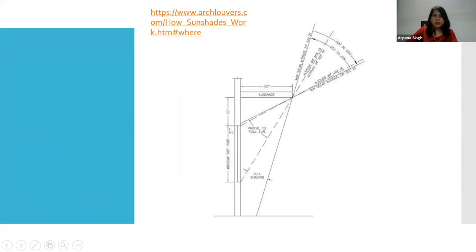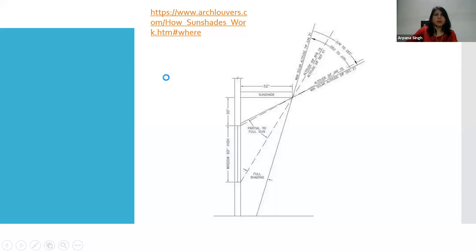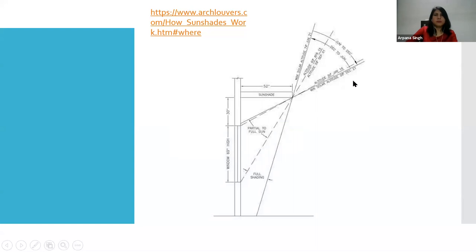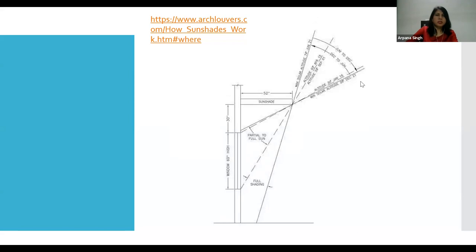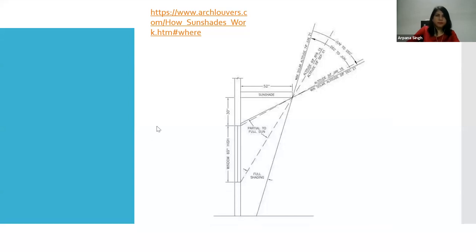In the diagram you can see the wall and sun shade according to the angle derived from the sun. I've included a link in the presentation which covers whole research on how sun shades are designed and how effective they are at every particular time, showing how shades are formed. It's a very good resource - you can have a look at it in detail. Take out time and go through it as it's going to help you a lot.